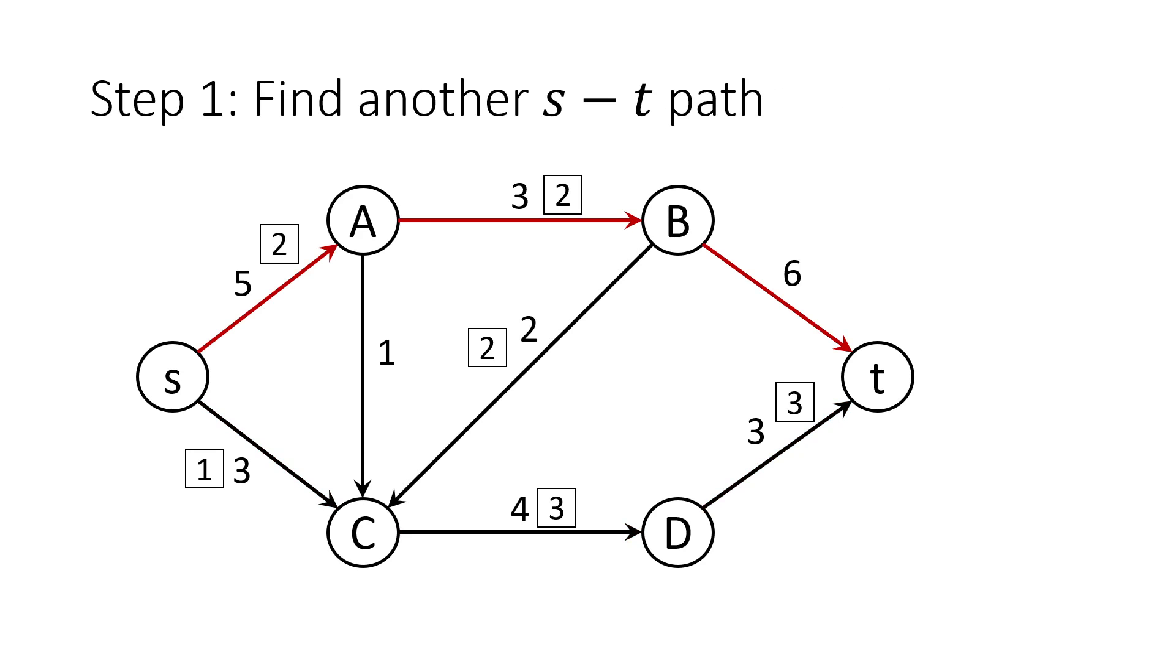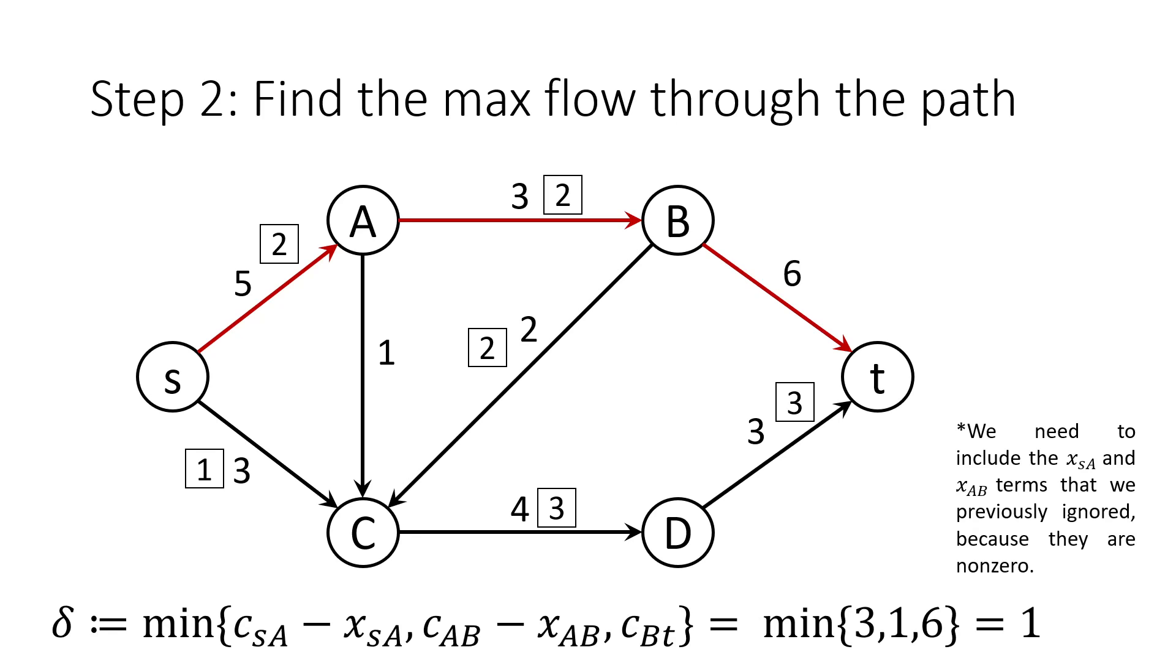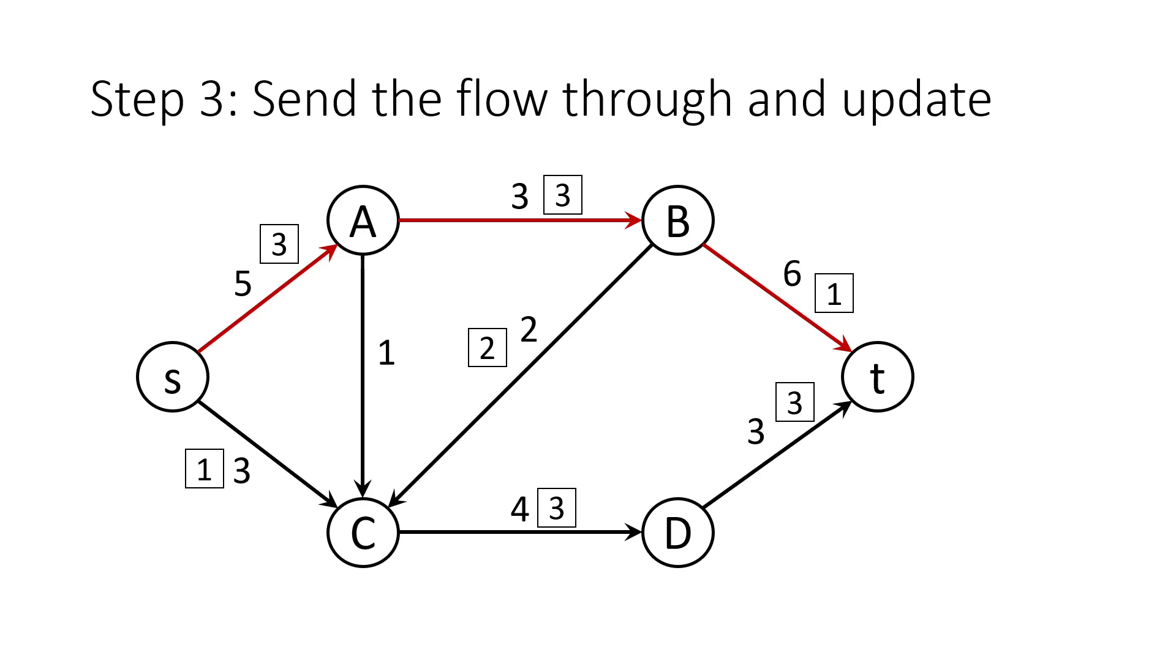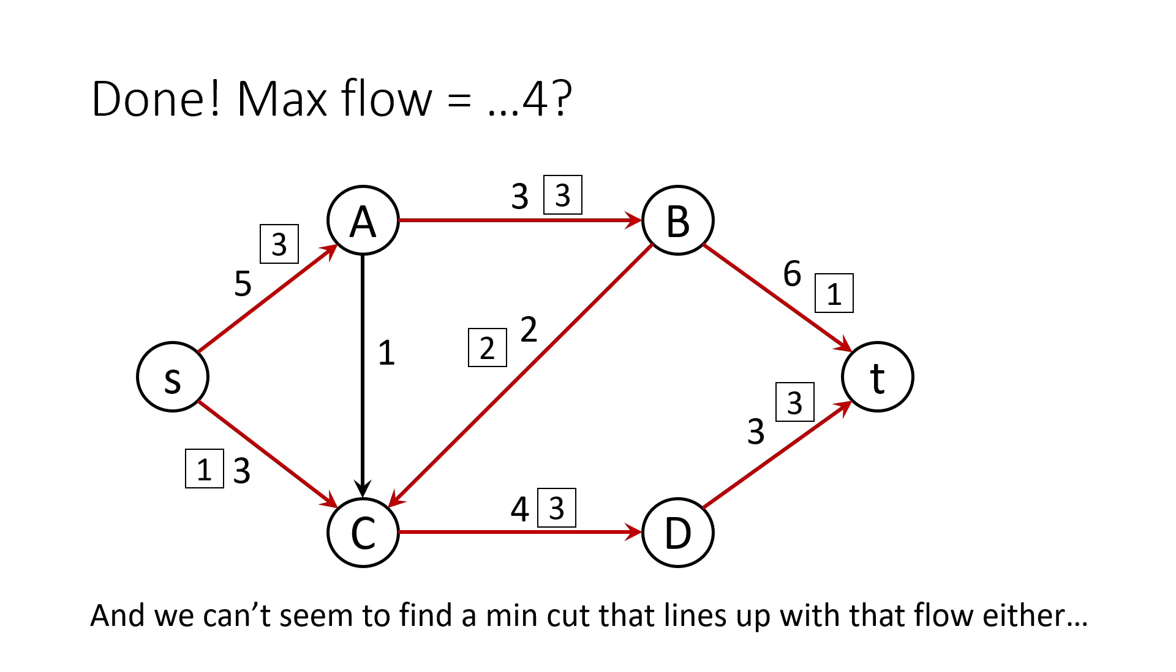And now, let's look at the graph and find another ST path. With the same technique we used last time, we can see that the most flow that we can send through this path is 1 unit again. And we update again.